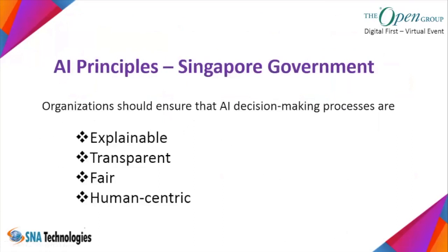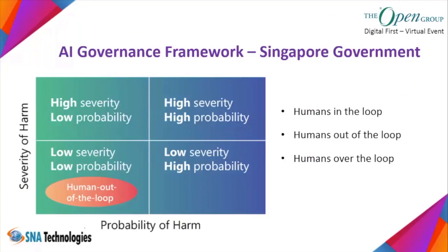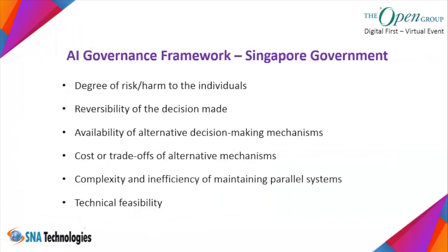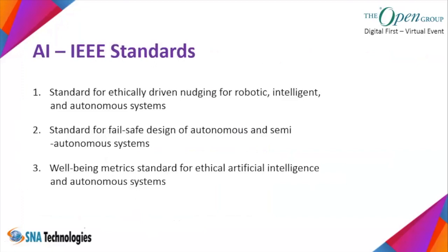These principles emphasize being human-centric, transparent, and doing good rather than harm. Singapore went further with specific guidance on when humans should be in the loop with AI systems: if the probability of harm and severity are both low, humans can be out of the loop; if both are high, humans must be in the loop. Singapore also produced a governance framework to help organizations build systems responsibly, and IEEE has standards for developing systems in an ethical manner beneficial to society.